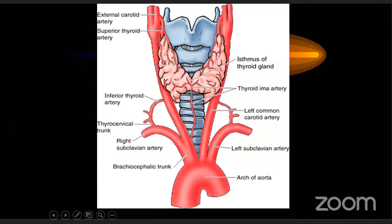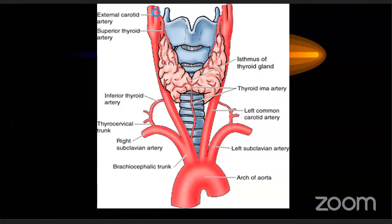The next important thing is the thyroid blood supply. The thyroid is a very vascular organ because it is supplied by three vessels. The superior thyroid artery is the first branch directly from the external carotid artery. The inferior thyroid artery comes from the subclavian artery — specifically, the third part of the subclavian gives rise to the thyrocervical trunk, from which the inferior thyroid artery arises.